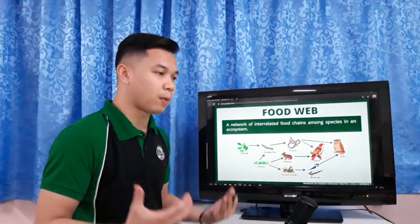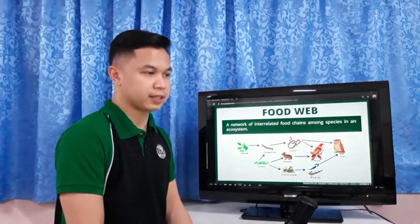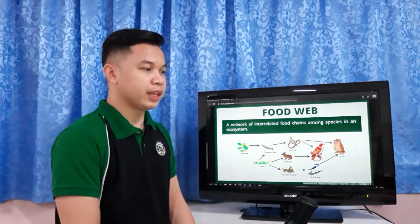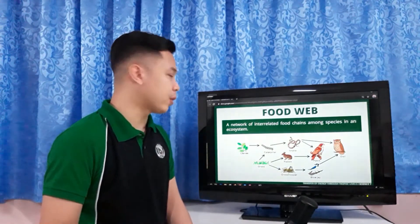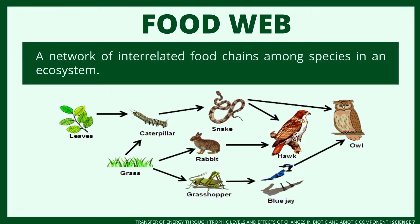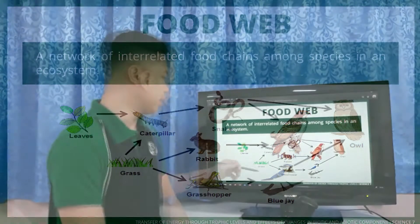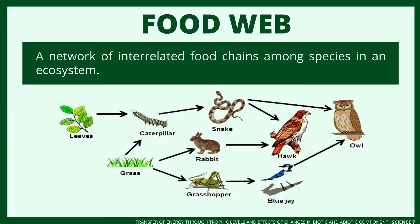When different food chains are interlinked, a food web is formed. Food webs are complex food relationships that exist in a natural ecosystem. In a food web, each animal and plant may be part of more than one food chain — it is a network of interrelated food chains among species in an ecosystem. For example, leaves will be eaten by a caterpillar, and grass will be eaten by a rabbit or a grasshopper.